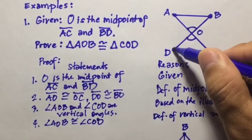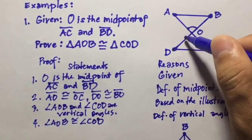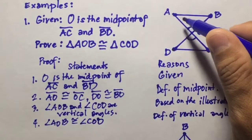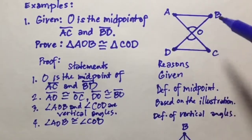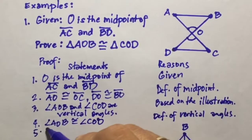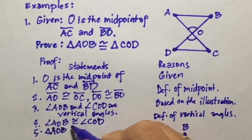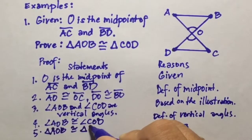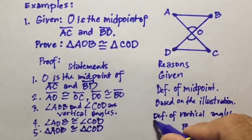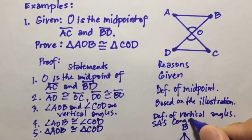Now we have the sides and the included angle proven. We have shown these pairs of sides and angles are congruent, so we can say that triangle AOB is congruent to triangle COD, and the reason is the SAS congruence postulate.